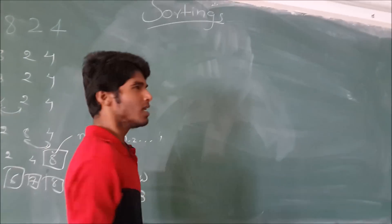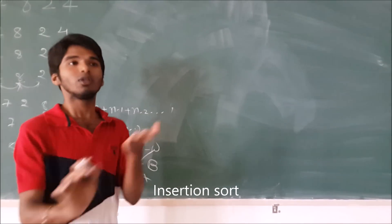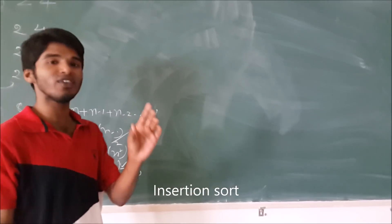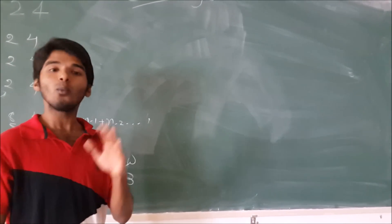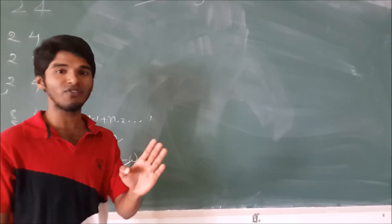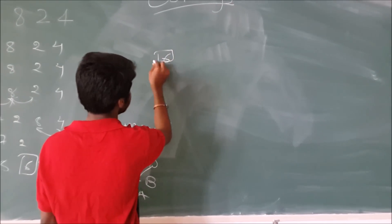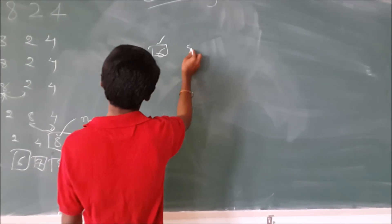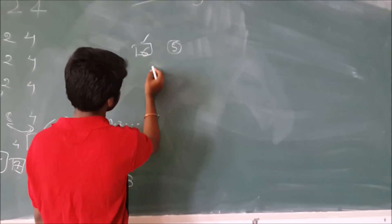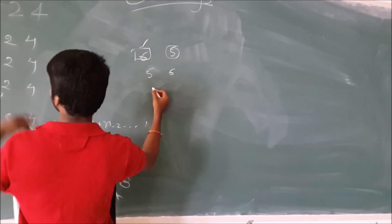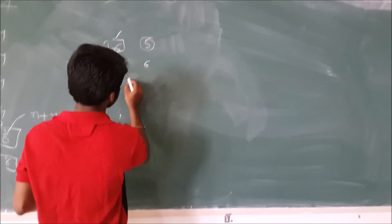Next we'll discuss insertion sort. Insertion sort is done by inserting each element where it belongs. Like if we have 5, 15, and 7, and we have to insert 7, we'll insert it in between 5 and 15. So we'll consider first 6, and we have to insert 5. Since 5 is smaller than 6, we get 5, 6. And we'll consider 3 — 3 is again smaller than 5 and 6.